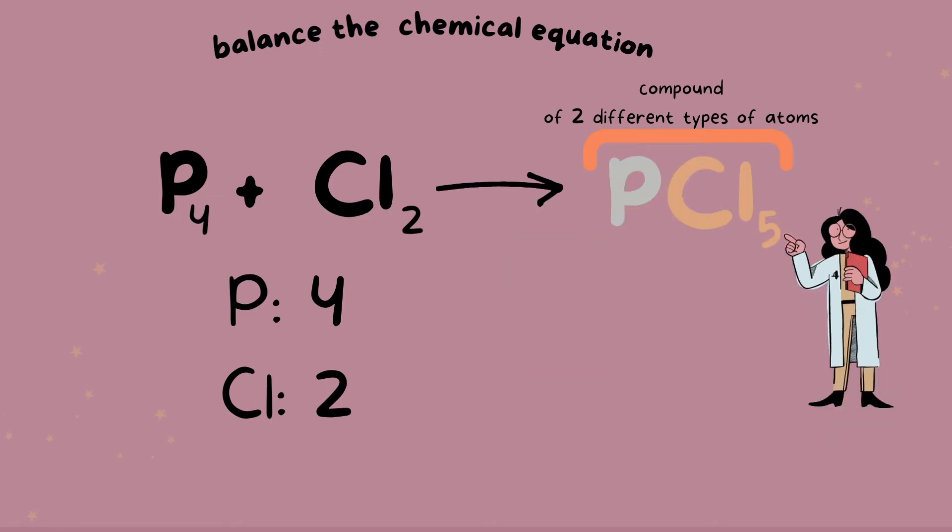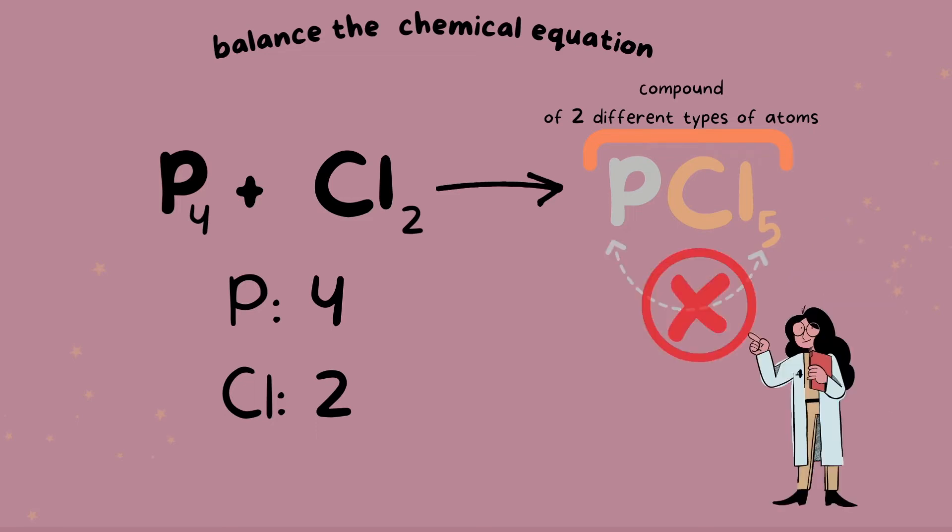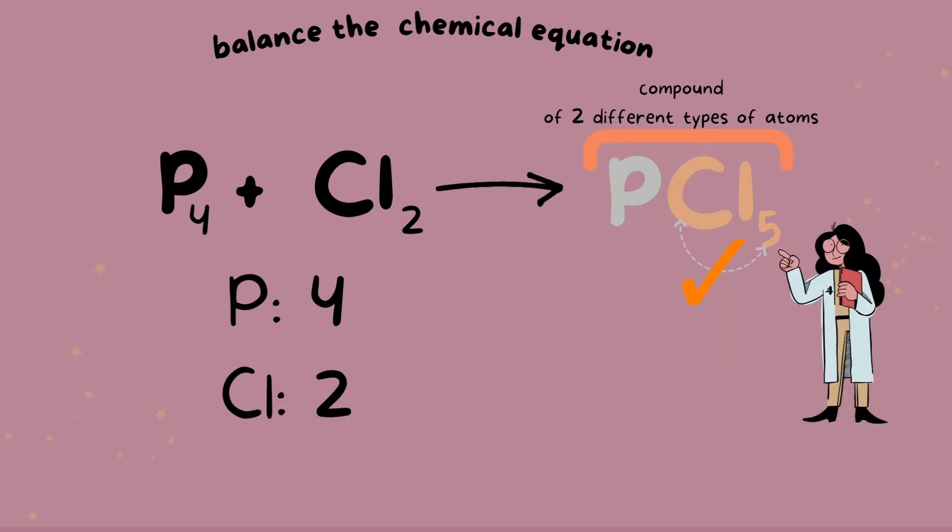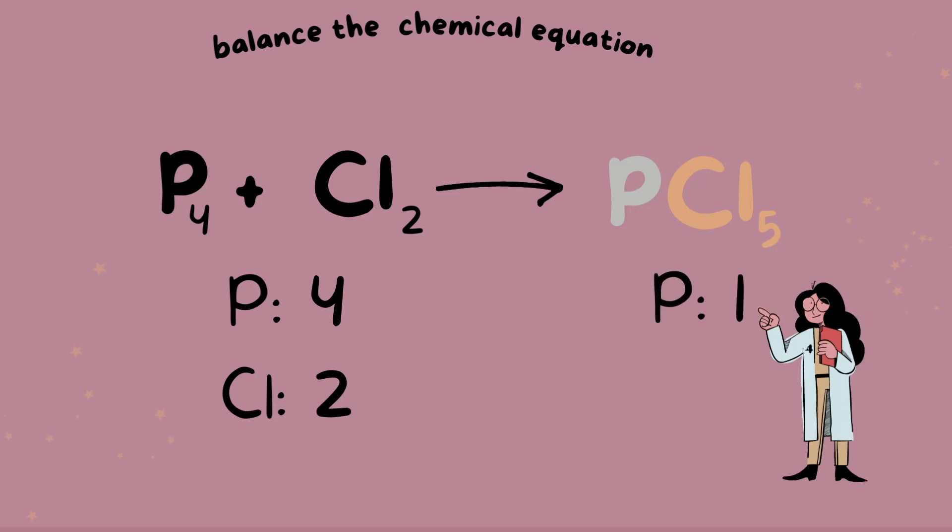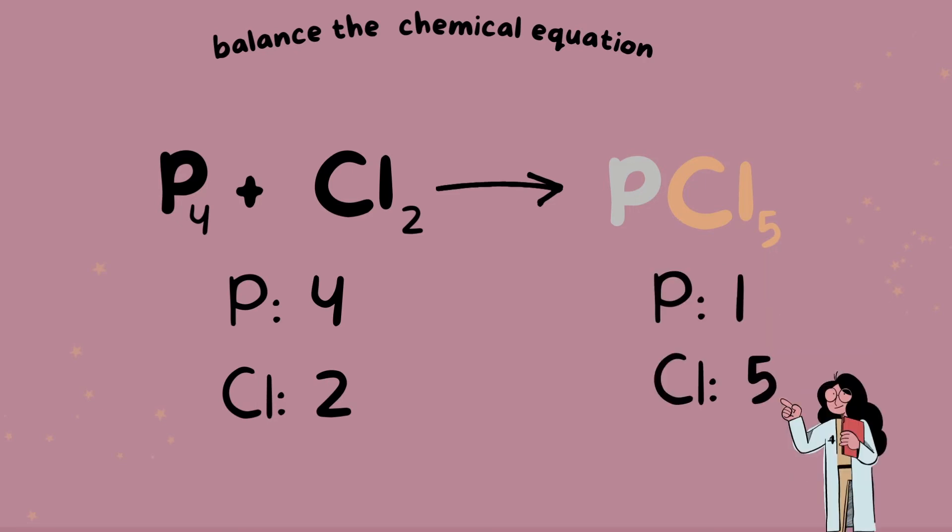It might be tempting to multiply the number five to the phosphorus, but this would be totally wrong. The number five only belongs to the chlorine. The subscript only belongs to the element it is attached to, unlike the coefficient which is applied to every atom or every element in the compound. That being said, phosphorus has one mole or one atom and chlorine has five moles or five atoms.